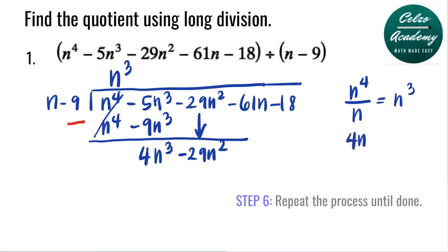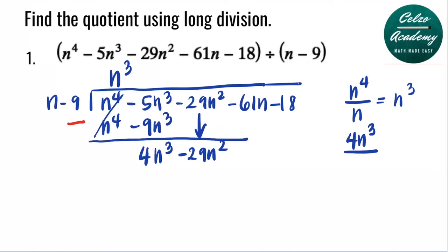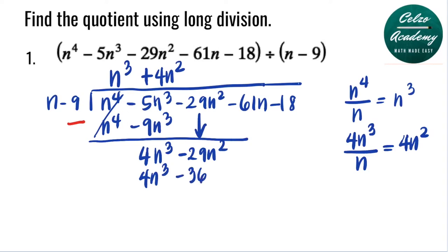We divide the first term, 4n cubed, by the first term of the divisor, n. 4n cubed divided by n is 4n squared, so the second term of the answer is 4n squared. Now we multiply 4n squared by n minus 9: 4n squared times n is 4n cubed, and 4n squared times negative 9 is negative 36n squared. Now we subtract: 4n cubed minus 4n cubed is 0, and negative 29 minus negative 36 is 7, so we have 7n squared.